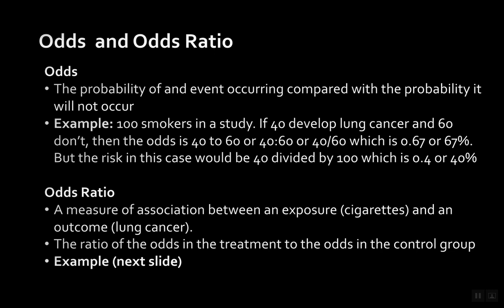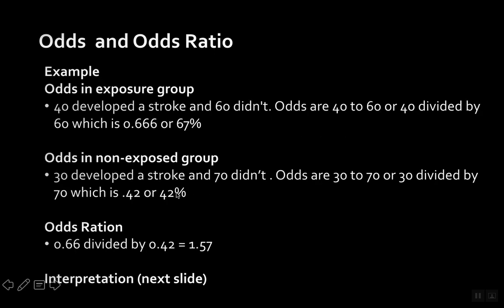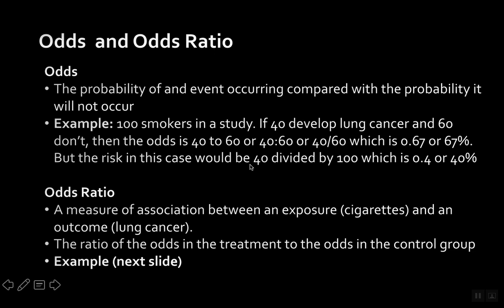You can do 40 to 60 as a ratio: 40 divided by 60, which gives you about 67%. The risk in this case would be 40 divided by 100, which is 0.4 or 40%. So you see the difference: risk is 40 divided by the total number of people, compared to odds which is 40 divided by people who didn't get it — people who got it versus people who didn't develop it.